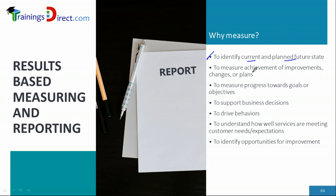We need measurements to understand all of that. Only then can we plan for a future state, set targets, and measure our progress towards it. Measurements also help us check what has been achieved on improvement initiatives and ongoing changes — for example, moving from a waterfall to an agile approach — and help us understand how actual performance compares to the initial plan.